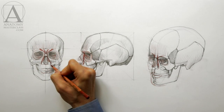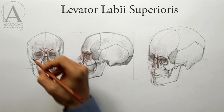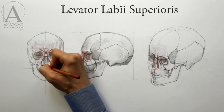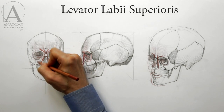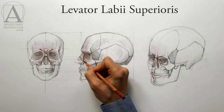On both sides of the nose is a pair of muscles that elevates the upper lip. These muscles can work together to lift the entire upper lip, or separately, lifting only one side at a time.